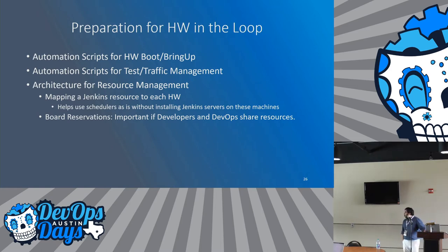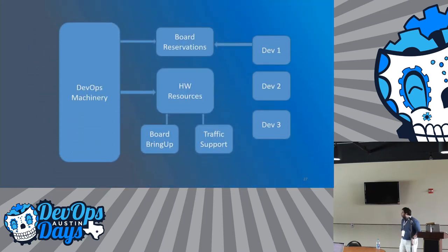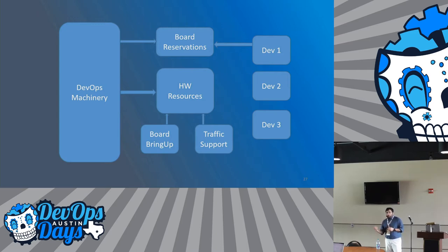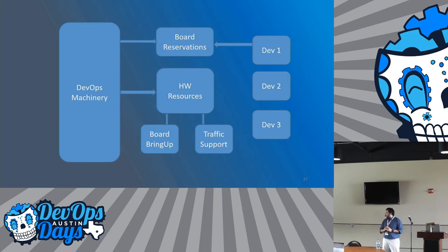In preparation for hardware in the loop, some of the things you need to do beforehand: look at how you're going to make preparations when hardware finally arrives and the simulator gets replaced. Things that make a lot of sense include board reservation systems, especially if board resources will be shared between humans and the DevOps machinery. You also need board bring-ups done in detail — getting automated scripts ready for the BIOS to come up and the kernel boot.